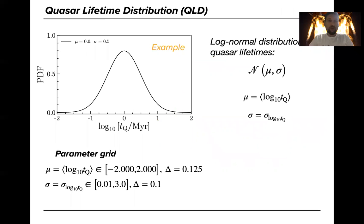So how can we infer the quasar lifetime distribution from the individual measurements? Let's assume you have some form of quasar lifetime distribution. We assume a log-normal distribution which is characterized by the mean μ and the sigma σ. The plot shows you an example of such distribution.